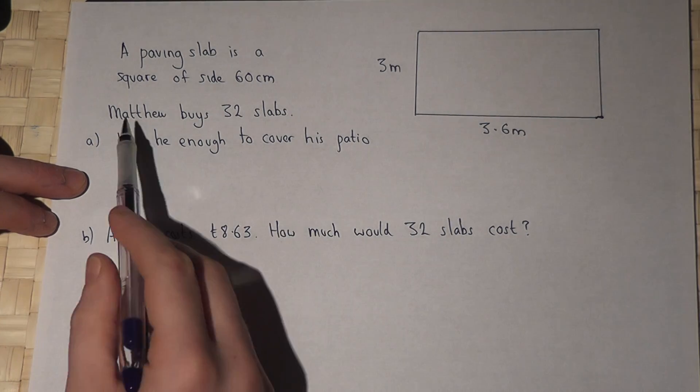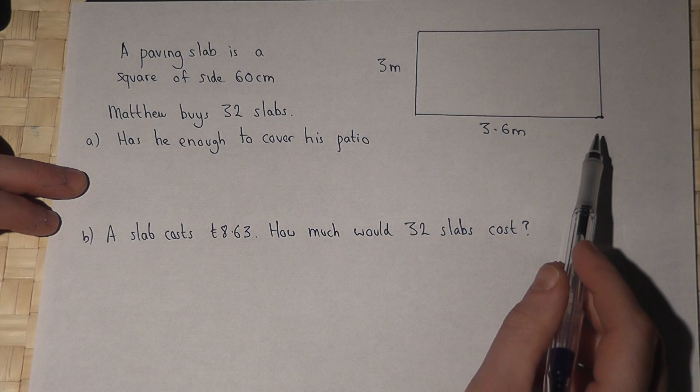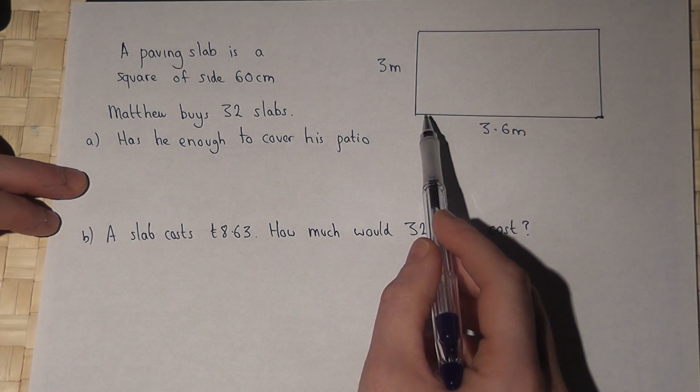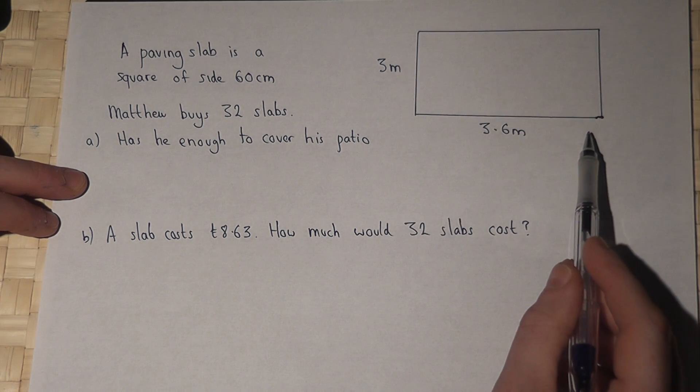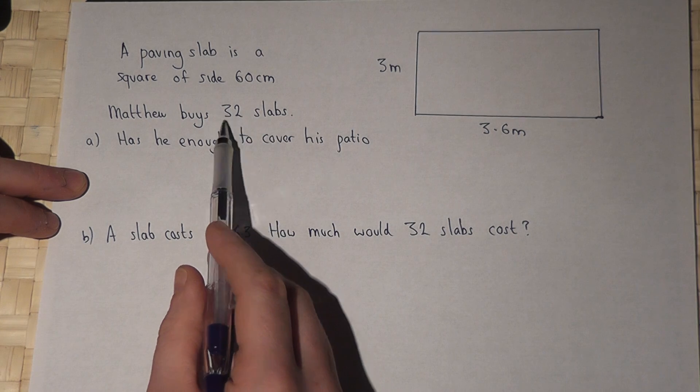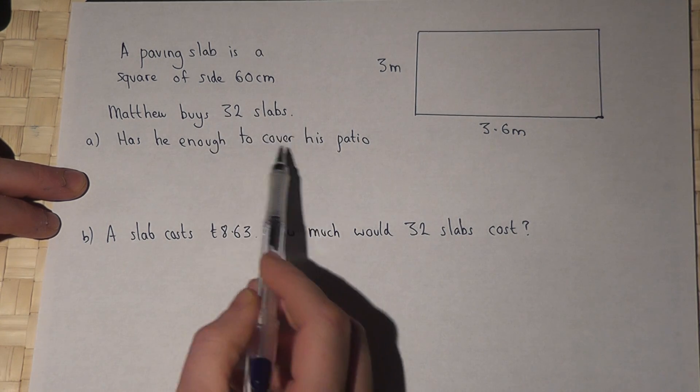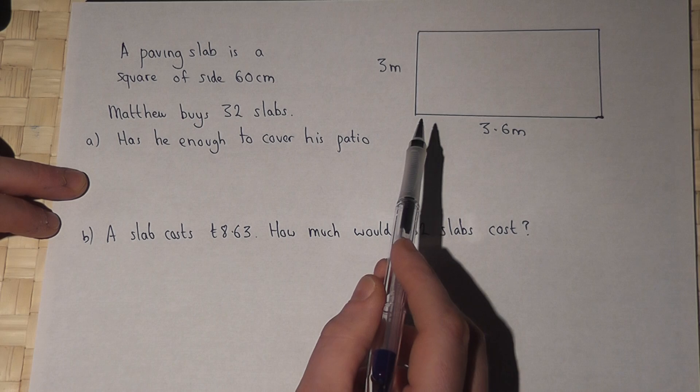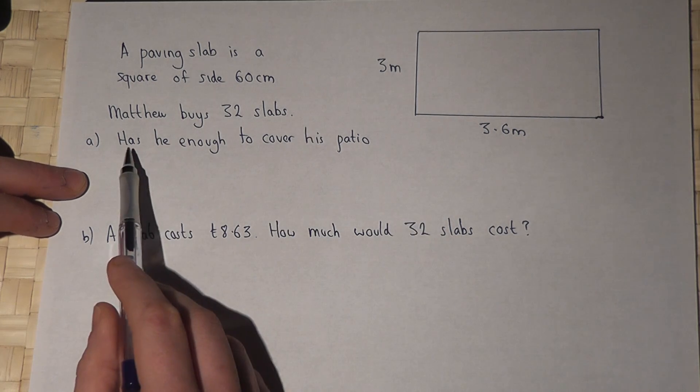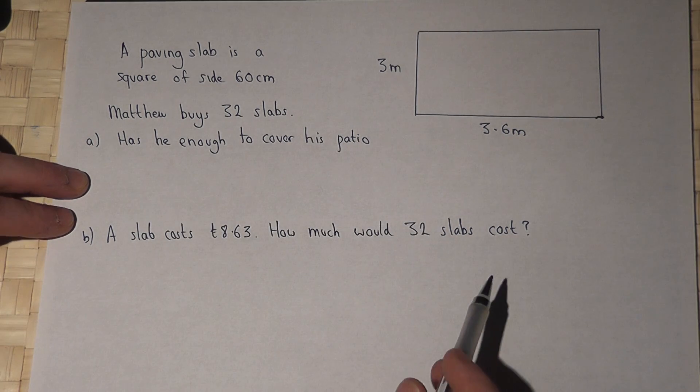In this problem, Matthew has a patio which measures 3m by 3.6m, and he buys 32 slabs, which are all squares with a side of 60cm. And part A says, has he enough to cover his patio? Well,